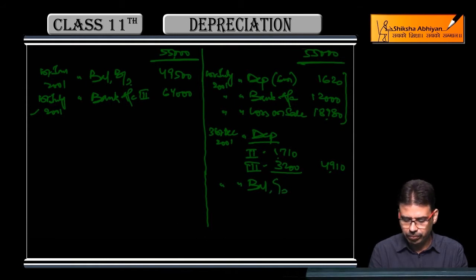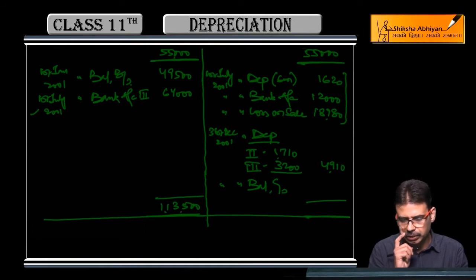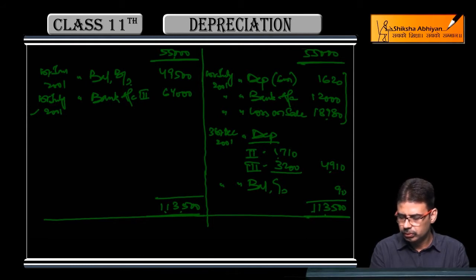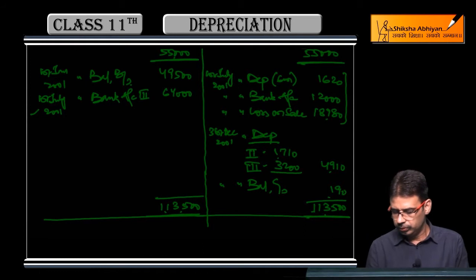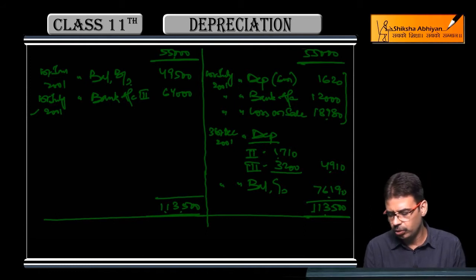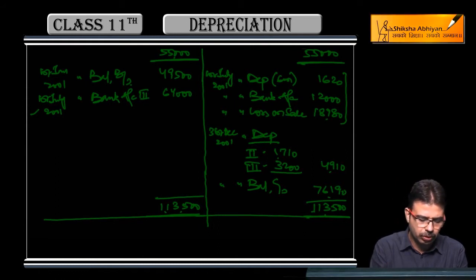Balance carried down total came to 1,13,500. And whatever balance remains is 76,190 rupees - our remaining balance. Let me make a working note for this. First machinery cost was 40,000.